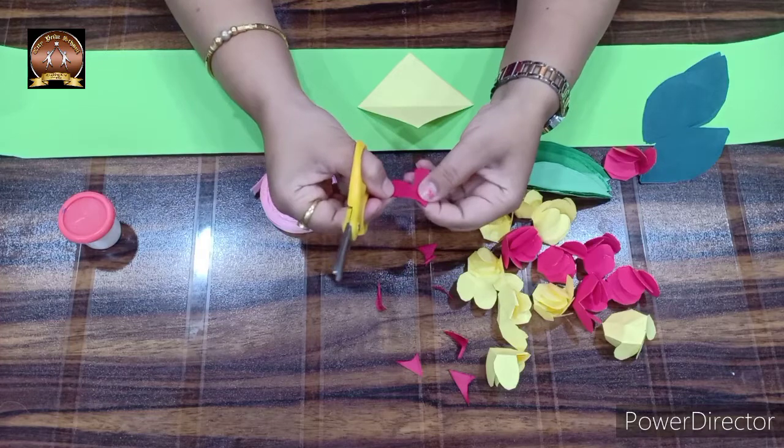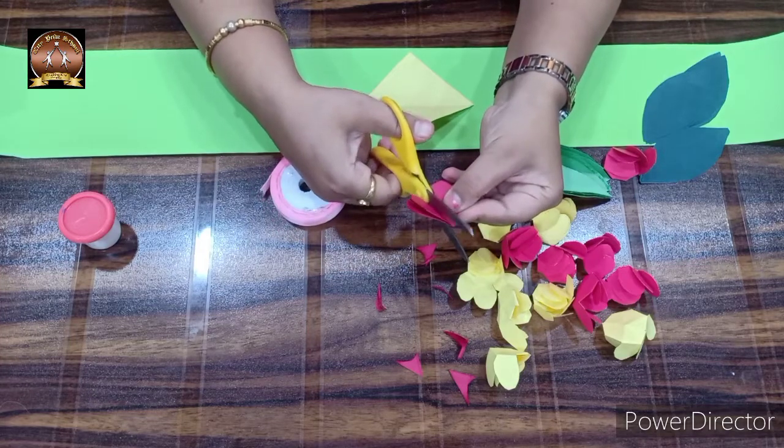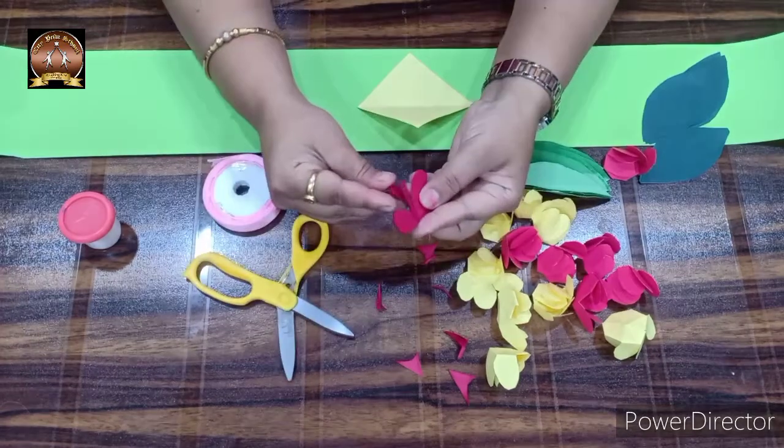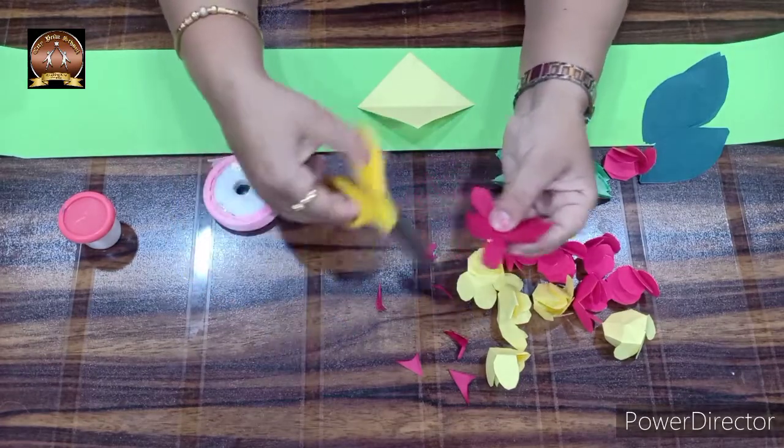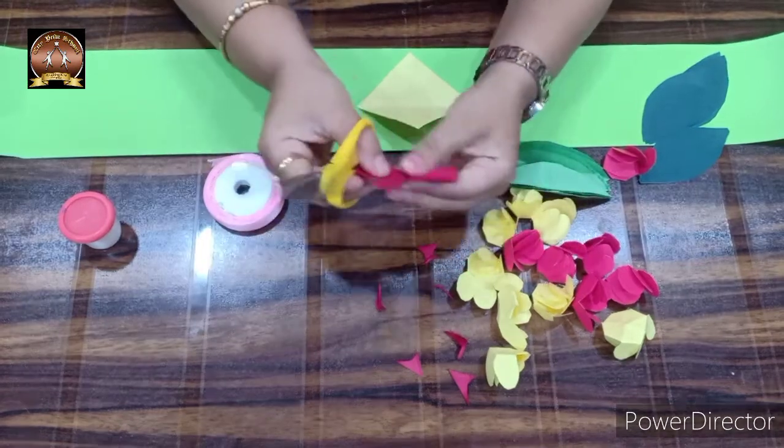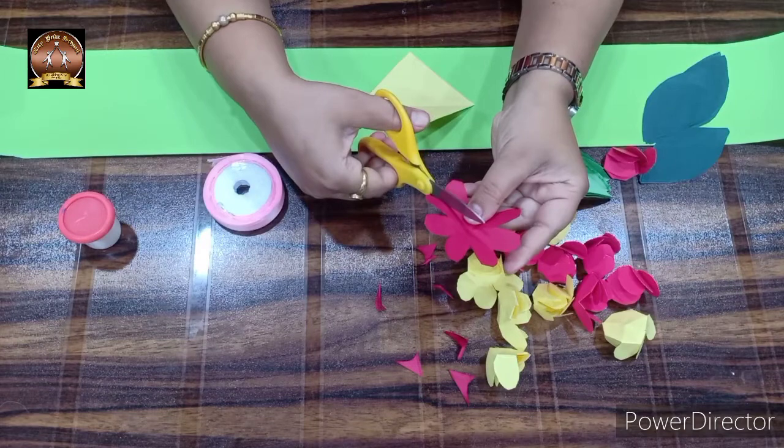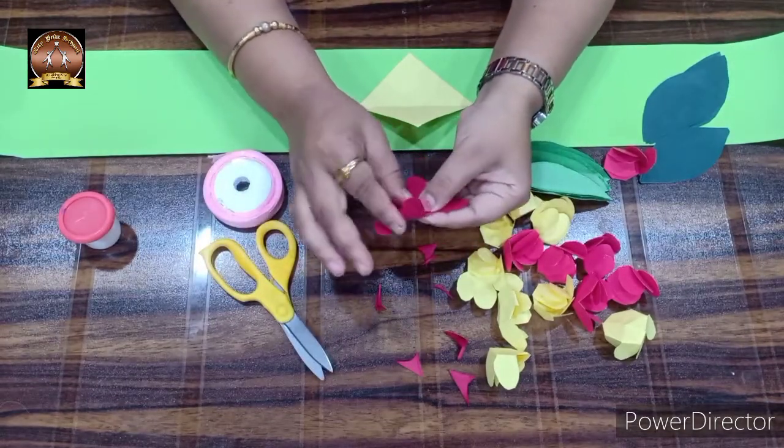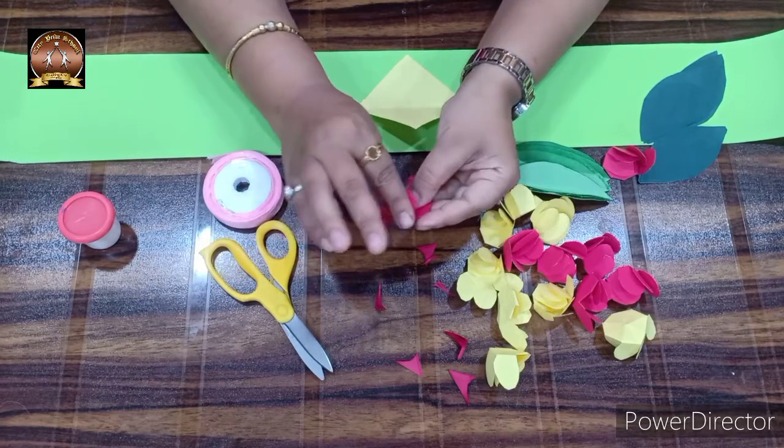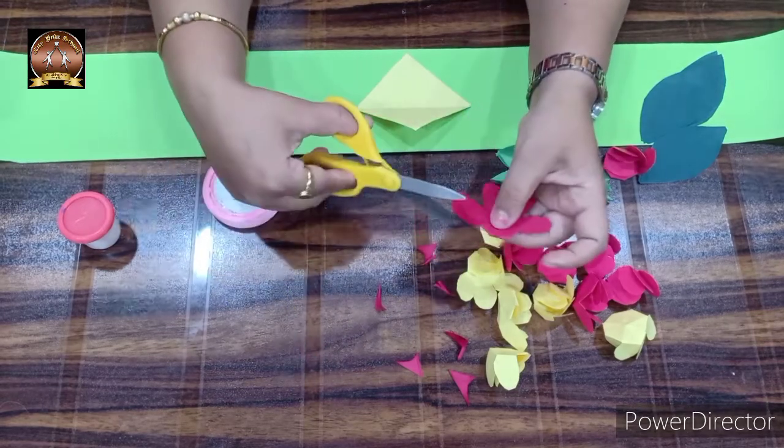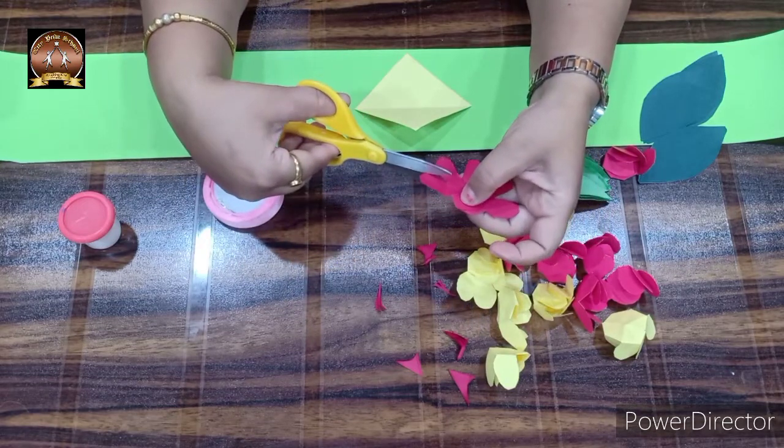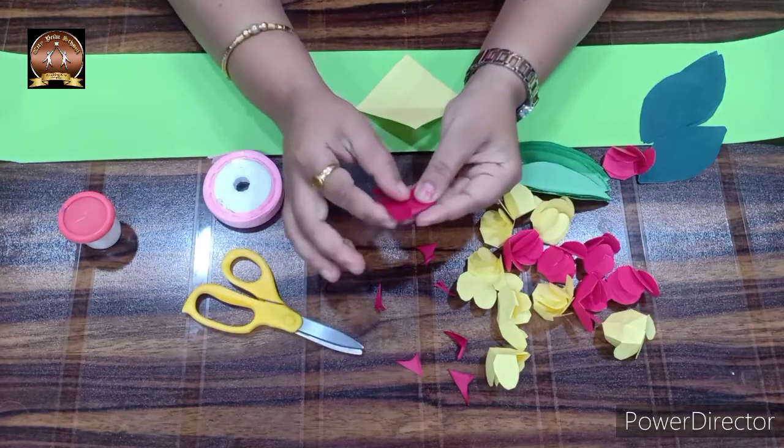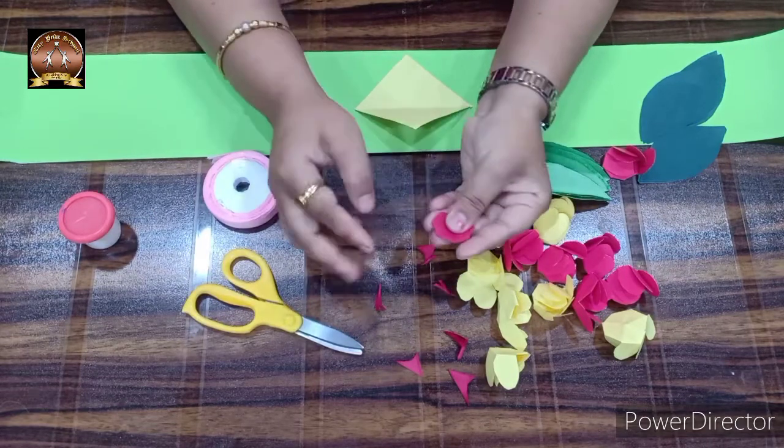Next, we are going to open it and give a little cut here where we folded. Cut from this side and this side as well. After completing, we are going to fold the petals like this. Why? Because we are making a 3D flower. I am going to fold each petal.